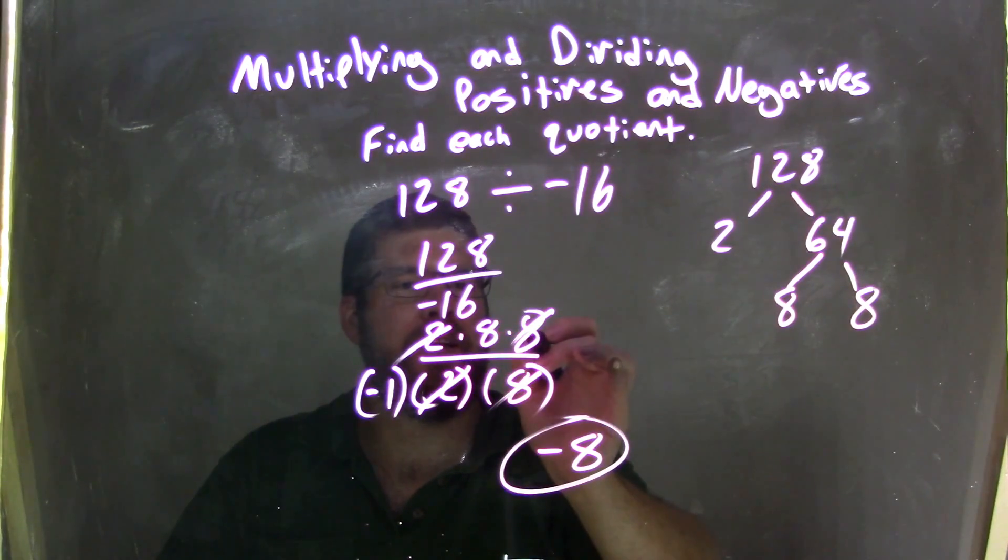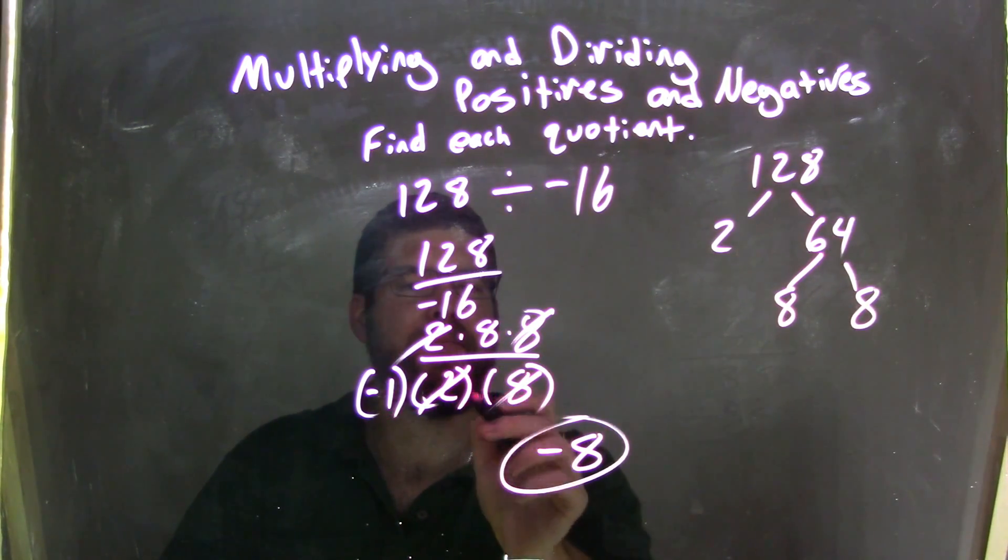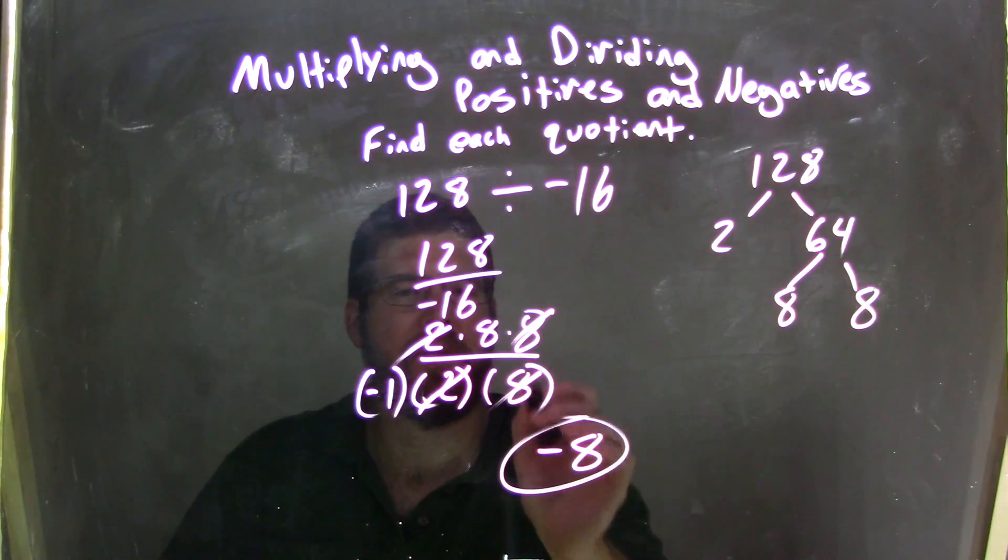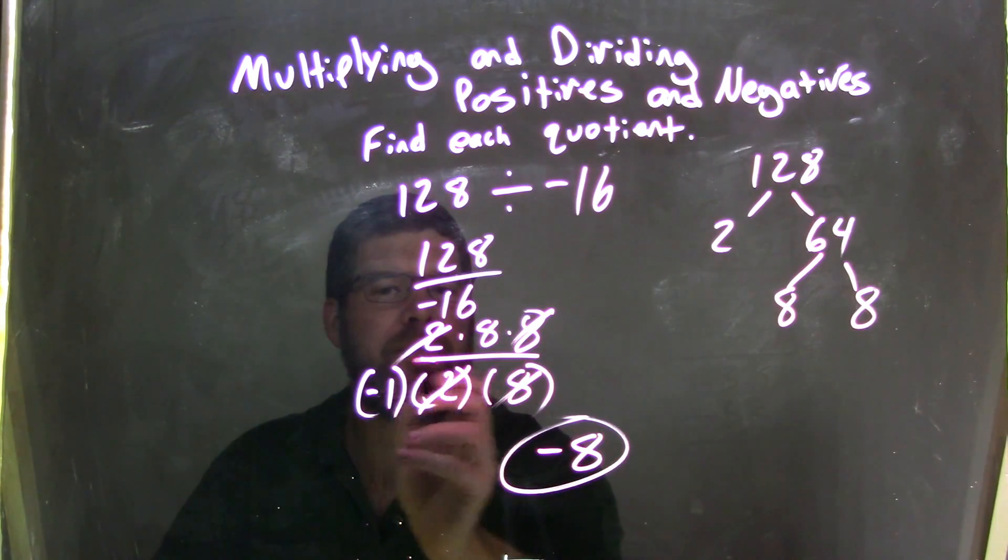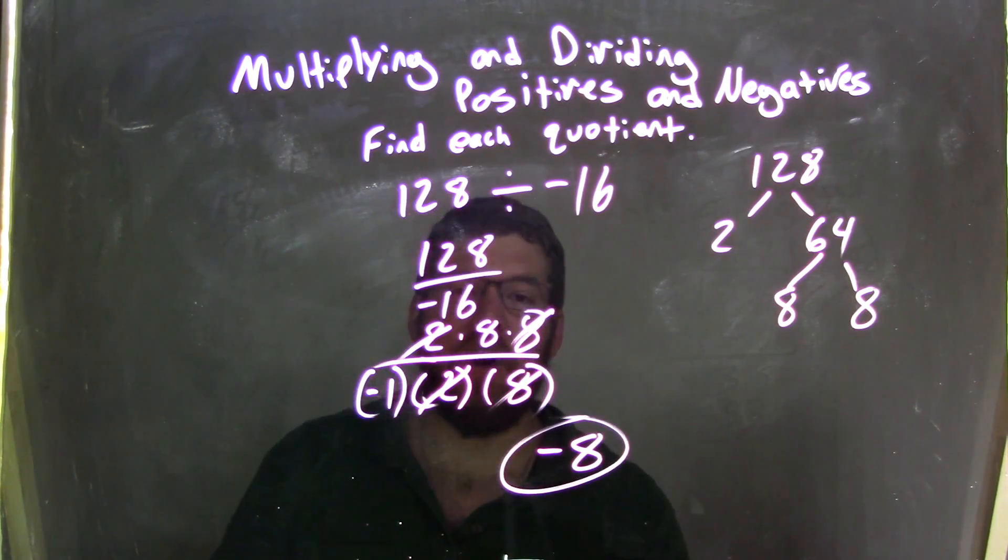So 2 times 8 times 8 in the numerator, denominator negative 1 times 2 times 8. The 2's cancel, the 8's cancel. That's 8 divided by negative 1, which is negative 8.